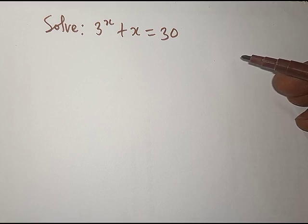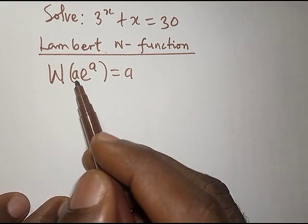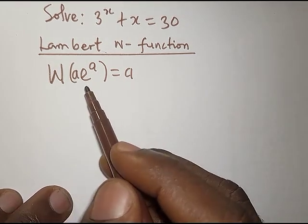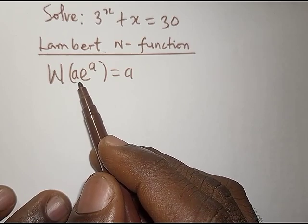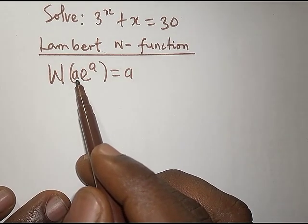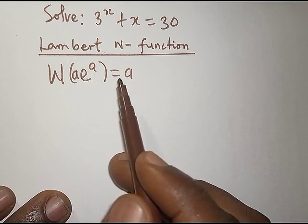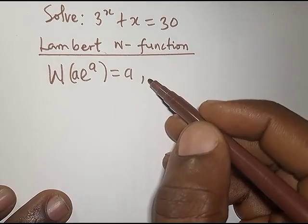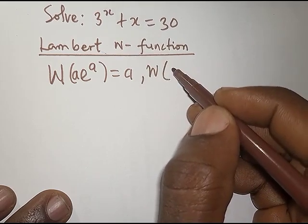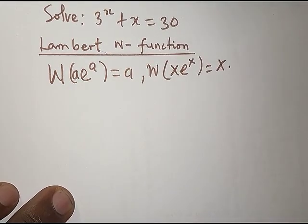We have the Lambert W function in this form: W of (a · e^a) equals a. So whenever you have this W function operating on a · e^a, it gives us a. For example, W(x · e^x) equals x. That is what the Lambert W function does.